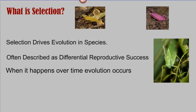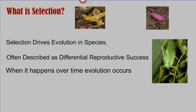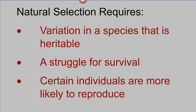Because the green katydids reproduce more and have better reproductive success, they become the most common members of the population — we have genetic change over time, which is the definition of evolution. Natural selection is one kind of selection; it's the selection that Darwin described. It's not the only thing that can drive differential reproductive success, but it's the one that happens most in the natural world, and it has three components.